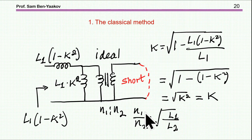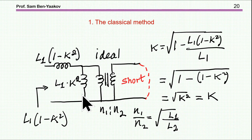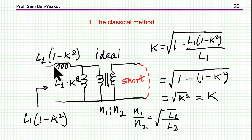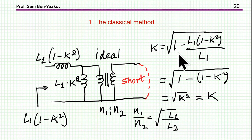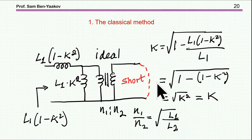There are a number of methods — I'm showing three approaches. The first is the classical method, which hinges on representing the magnetic element in this equivalent configuration. If you short the output, you have an ideal transformer with a short, so what you see is the leakage reflected to the input. Taking this measured inductance divided by L1 gives one minus K-squared. Therefore, the square root of that expression is K. So the square root of the ratio of the short-circuit inductance to L1 gives you K.